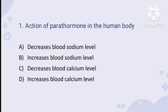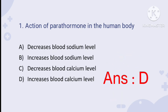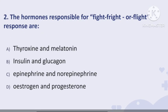Question number one: the action of parathormone in the human body. First, we have to know what parathormone is — it is a hormone produced by the parathyroid gland. The main function of this hormone is that it increases the calcium level in the blood. Therefore, the right answer is option D.